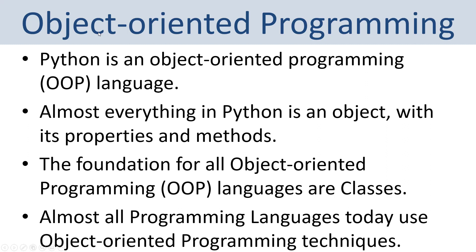Python is an object-oriented programming language, shortened OOP. Almost everything in Python is an object with its properties and methods. The foundation for all object-oriented programming languages are classes, which is the topic in this video. Almost all programming languages today use object-oriented programming techniques, so it's important to know about classes, how to create them, and how to use them.